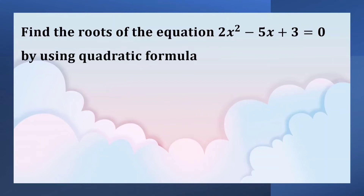Find the roots of the equation 2x squared minus 5x plus 3 equals 0 by using the quadratic formula.